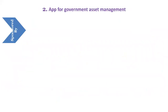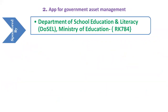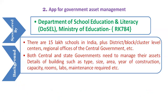The second problem in this domain is developing an app for government asset management. It is again sponsored by the Department of School Education and Literacy, Ministry of Education with the code RK784. We know that there are more than 15 lakh schools in India, plus district, block or cluster level centers, regional offices of the central government, etc. Both central and state governments need to manage their assets.